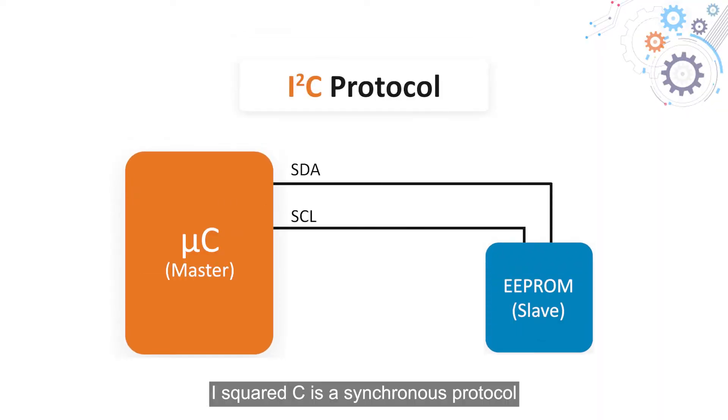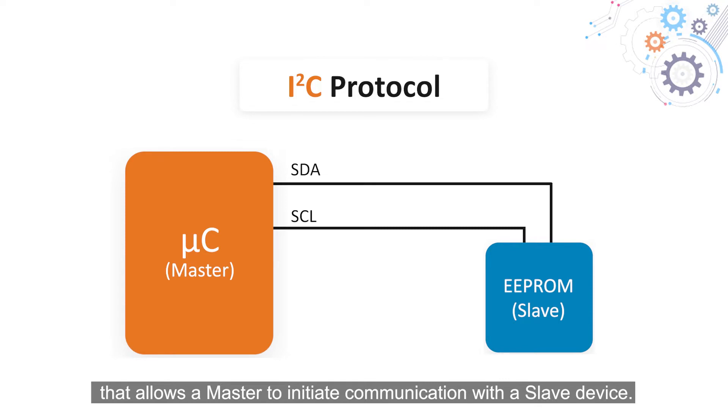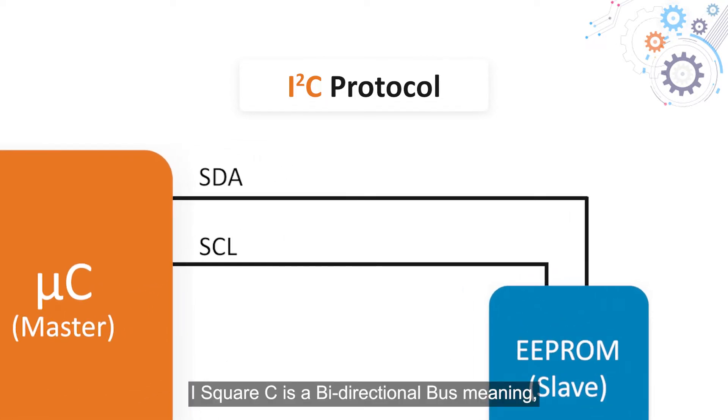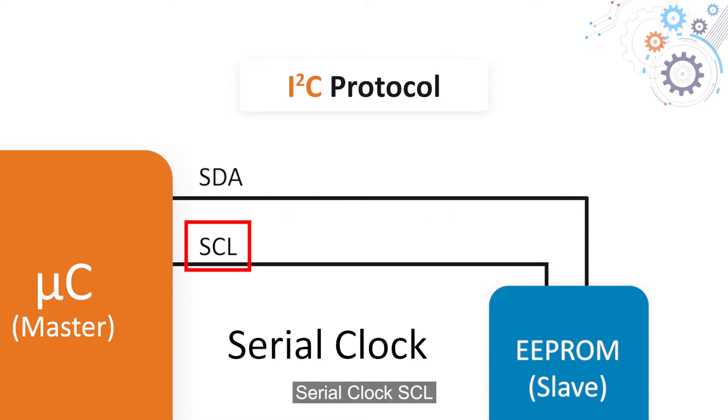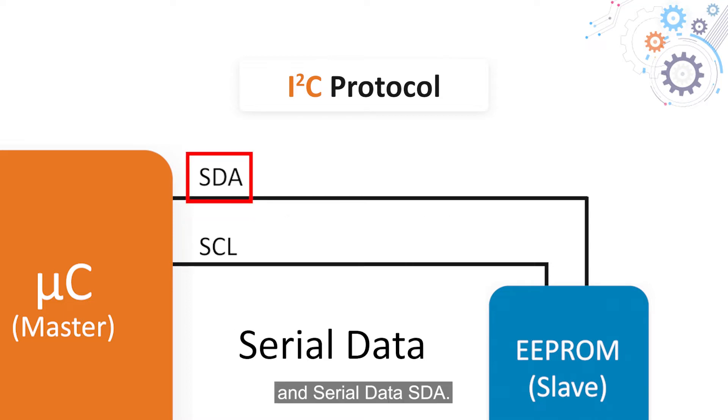I2C is a synchronous protocol that allows a master to initiate communication with a slave device. I2C is a bidirectional bus, meaning the master can both write to the slave and read from the slave. It is a serial bus with two bus lines: serial clock SCL and serial data SDA.